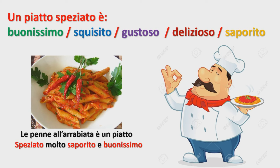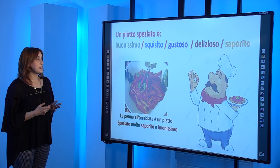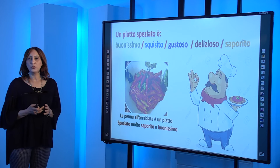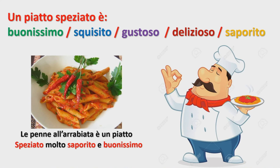Con queste spezie il piatto diventa speziato e danno un buon sapore. Come abbiamo detto, il piatto diventa molto buono, buonissimo, squisito, gustoso, delizioso, saporito. Tutti questi sono aggettivi con cui possiamo descrivere un piatto che ci piace. Per esempio, qui avete la foto di un piatto di penne all'arrabbiata, che è un piatto speziato, molto saporito e buonissimo, in cui usiamo i peperoncini.